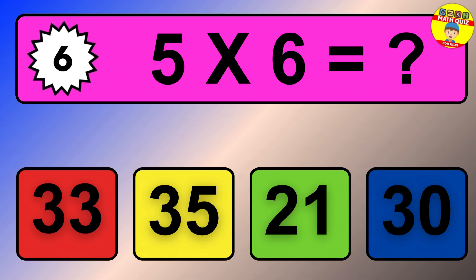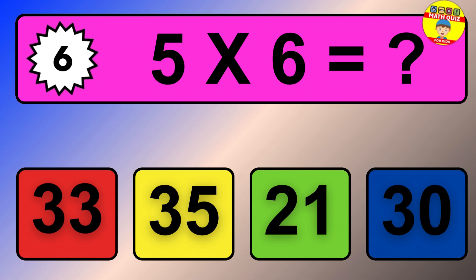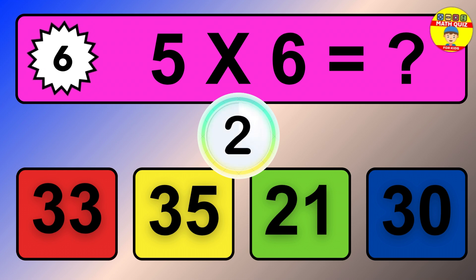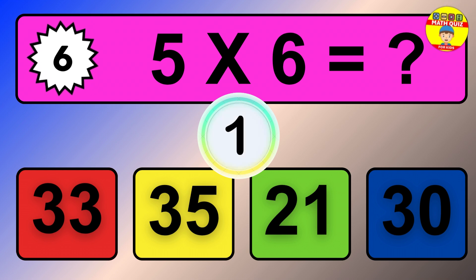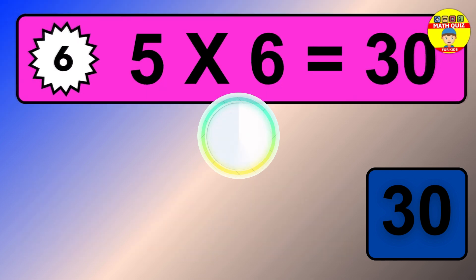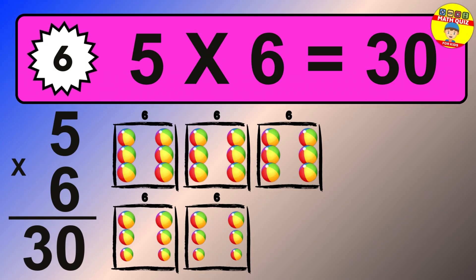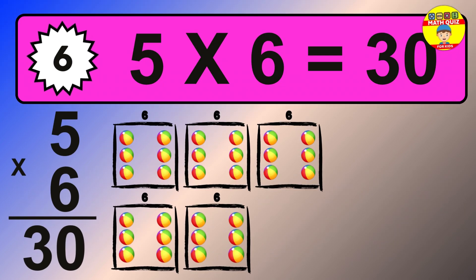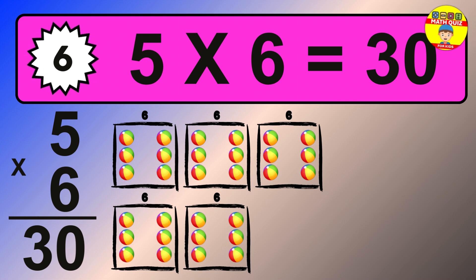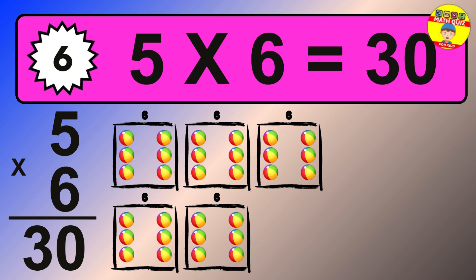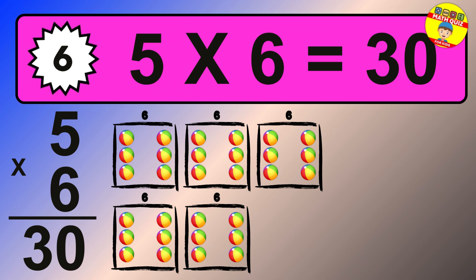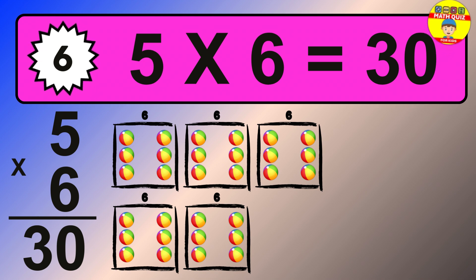Question 6. 5 times 6 equals what? The answer is 5 times 6 is 30. To calculate, we have 5 groups with 6 balls each one. So how many balls do we have? 30 balls.